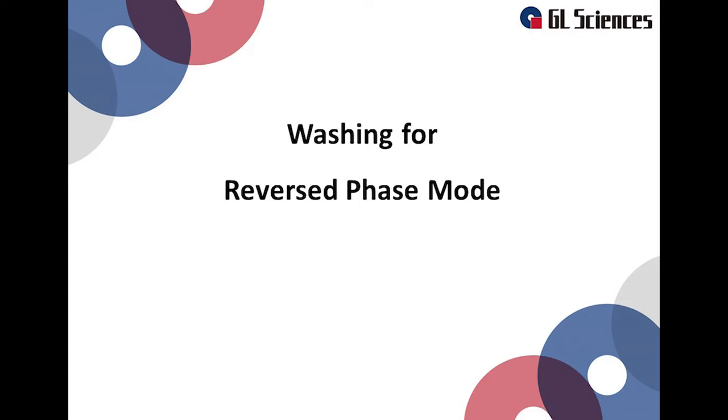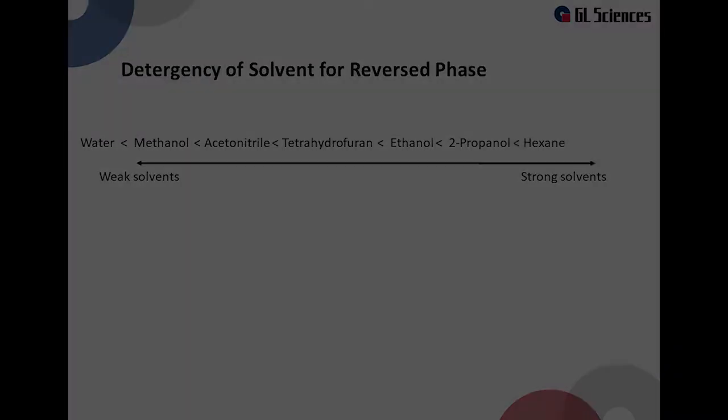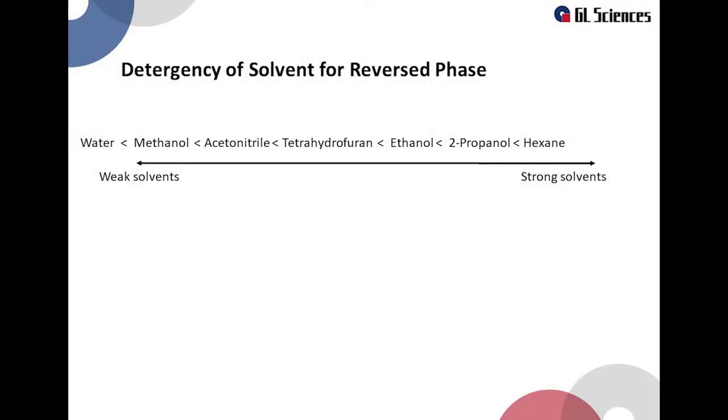Now we will explain how to wash the reversed phase mode column such as a C18 column. The solvents that are used to wash reversed phase columns have different detergent strengths. Of these, water is the weakest detergent. Hexane is the strongest detergent. A weak solvent is usually used as the mobile phase for a reversed phase column. Washing a column may require a stronger solvent.